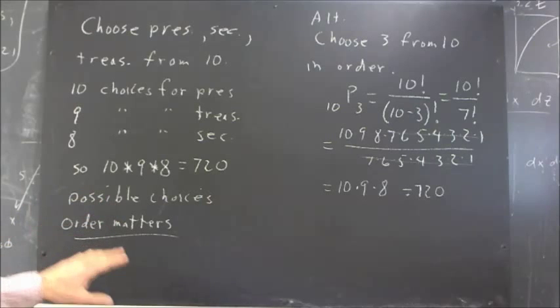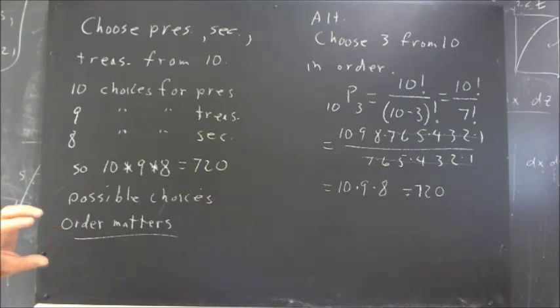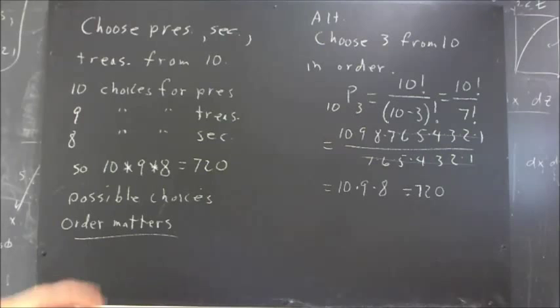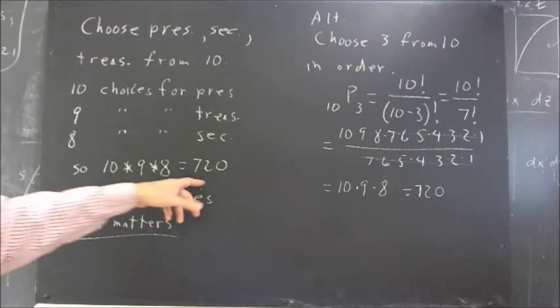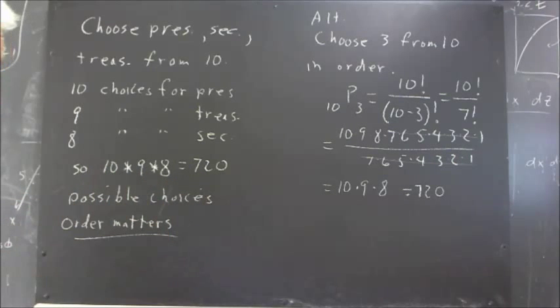The order matters when you do this. If you were selecting a committee of three, you would have the same three people no matter what order they were chosen in. So you would have to divide this number by the 3 factorial, six ways to order those three people.